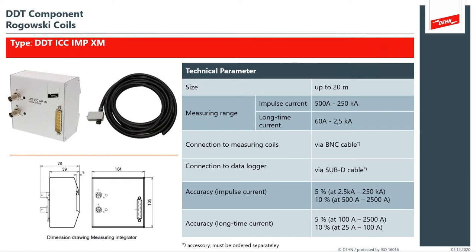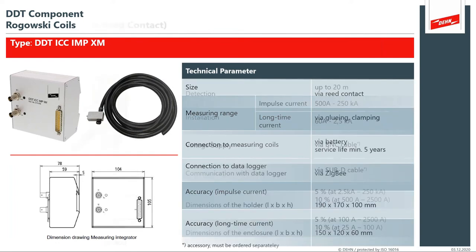We also have what we call the Rogowski coil and the integrator. The integrator basically combines data from the two Rogowski coils — remember, it has a low-amplitude coil and a high-amplitude coil. This gives you a wide bandwidth of measurement. You can actually capture events as low as 60 amps of continuous current and as high as 250 KA of impulse current, truly capturing the scientific waveform as if an oscilloscope were measuring the data. That's a really important aspect of this system.